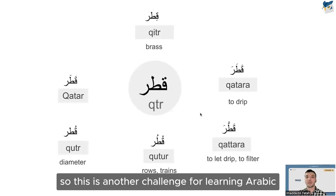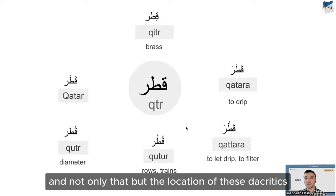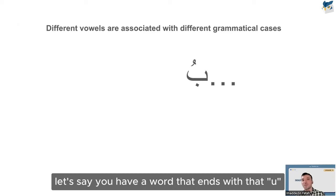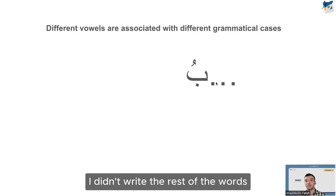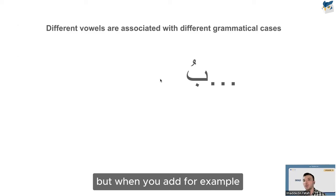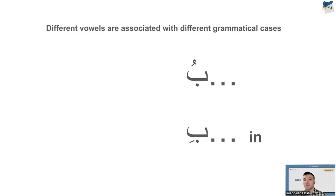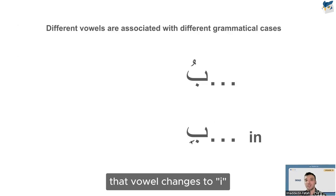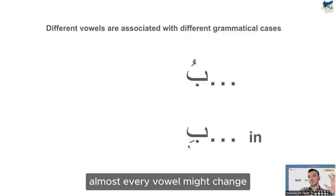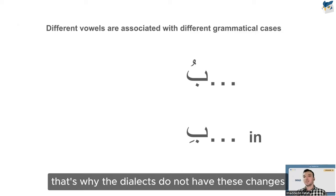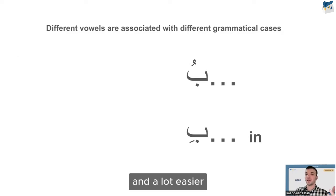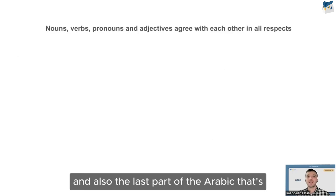There's another challenge: the diacritics at the ends of words also change based on a word's position in a sentence — this is called case endings. For example, a word ending in 'oo' might change to 'ee' when a preposition is added. In a full sentence, almost every vowel ending might change, and you have to apply these changes in real-time speech. This is precisely why dialects don't have these changes — dialects are much simpler and don't have these vowel-ending shifts.